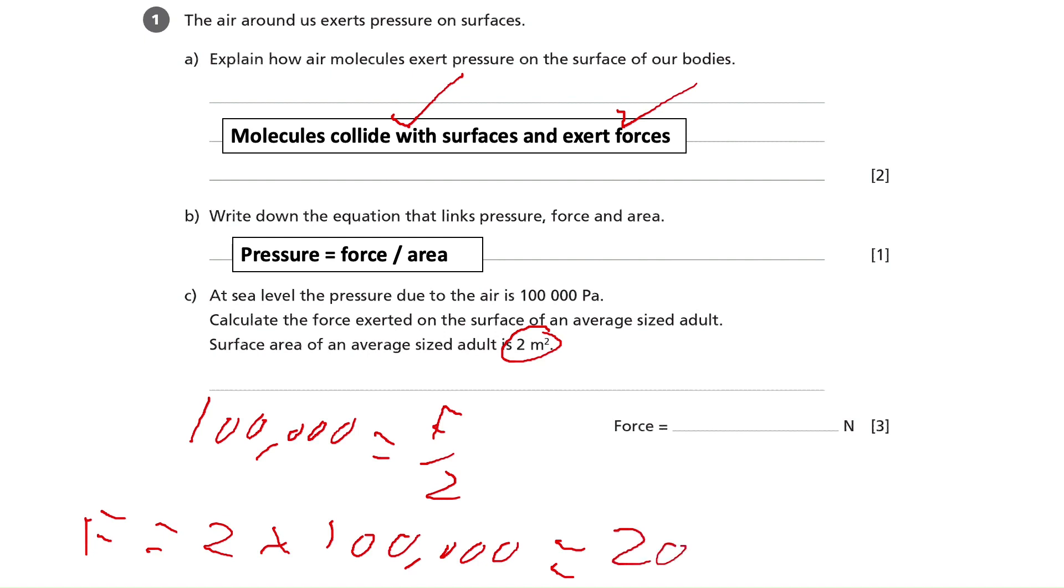So, that gives us an answer of 200,000 newtons, with newtons units given there, so we don't need to recall them. So, how are the marks divided out for this question? Well, we get one mark for the initial equation, one mark for the rearrangement, and then one mark for the final answer. That gives us the three marks available for this question.